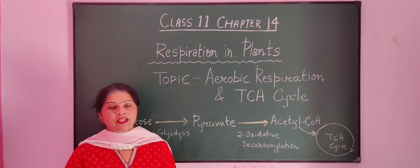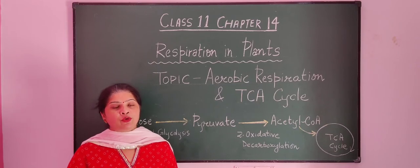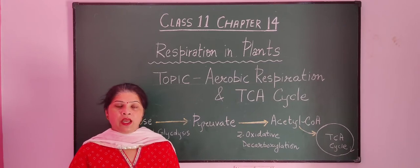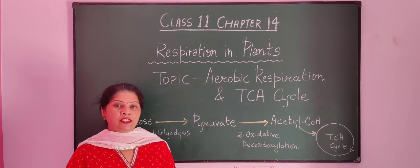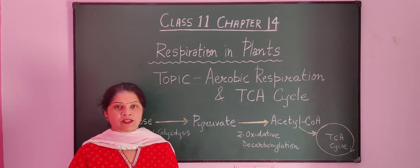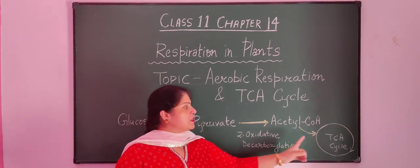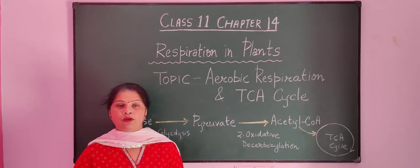Hello students. We are doing the 14th chapter, that is respiration in plants, and our today's topic is aerobic respiration and TCA cycle. Aerobic respiration is that which takes place in the presence of oxygen, and aerobic respiration has four major steps: first step is glycolysis, second step is oxidative decarboxylation, third step is TCA cycle, and fourth step is electron transport chain.